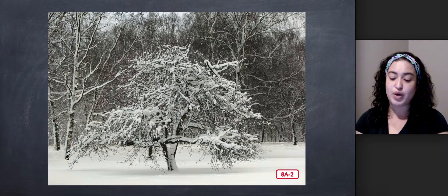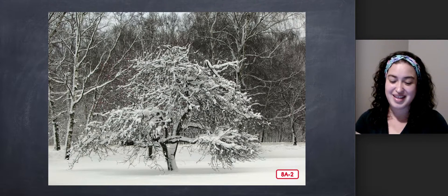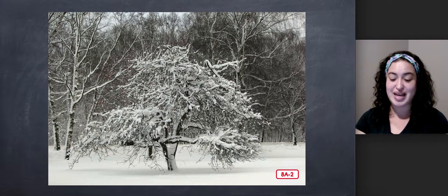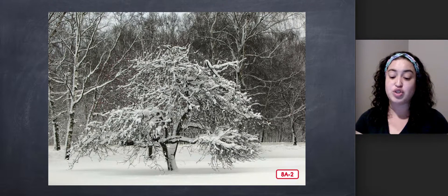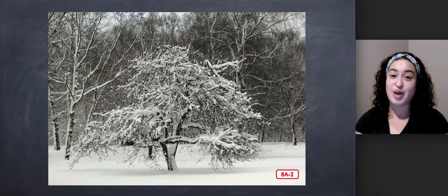Deciduous is a tricky word to say because it has four parts. Let's say the word together: de-si-ju-us. Now, say deciduous. The four parts of the word deciduous can actually help you remember that deciduous trees change in the four seasons. Seasons happen in a cycle or circle over and over again: spring, summer, fall, winter.